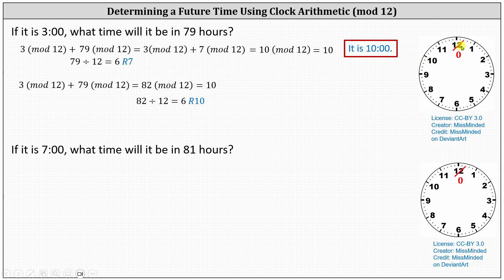Starting at zero, each full rotation is 12 hours. So we have 12, 24, 36, 48, 60, 72, then 73, 74, 75, 76, 77, 78, 79, 80, 81, 82. And once again, it's 10 o'clock.